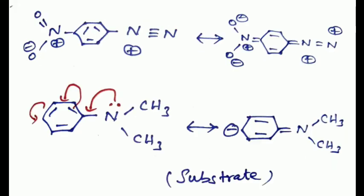Introduction of electron-withdrawing groups into the ortho and para positions of the diazonium cation enhances its electrophilic character by increasing the positive charge on the diazo group. The substrate should always have electron-releasing groups so it couples easily with the electrophile.